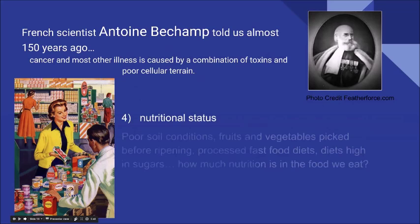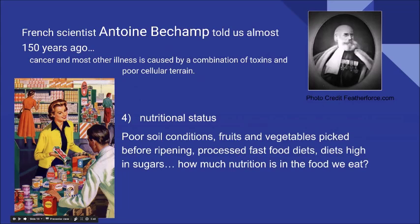Looking at nutritional status: do we have poor soil conditions? Are fruits and vegetables picked before ripening? Are we eating processed fast food diets high in sugars? The average North American spends $300 to $400 per month on nutritional supplements alone — but if cells aren't in a place to accept that nutrition, what percentage of those supplements is actually being received into the cell? It could be a very low percentage actually being taken in.